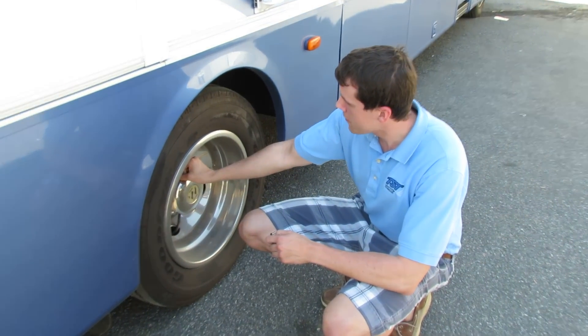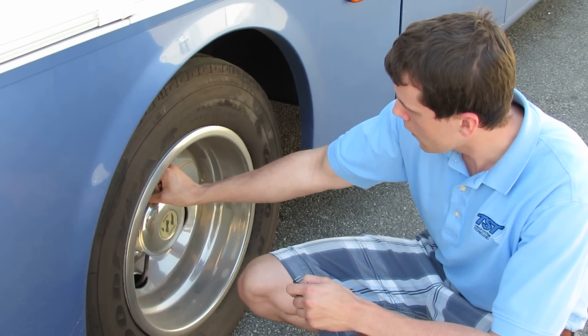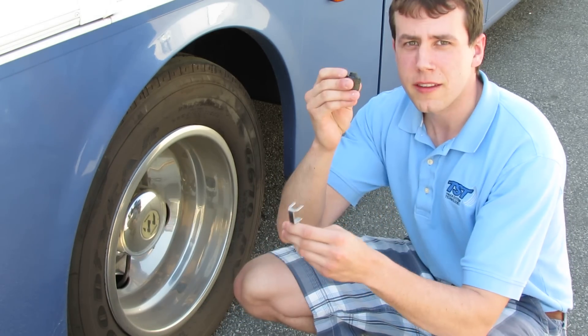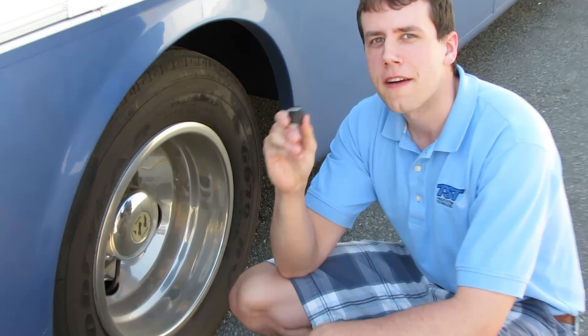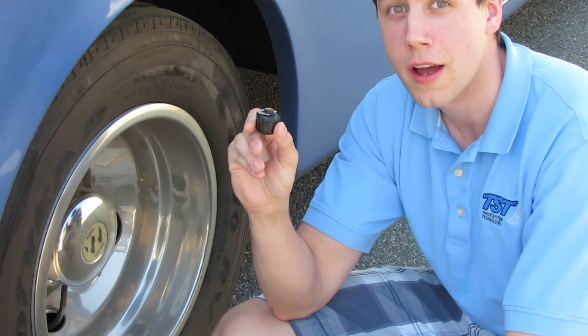Unscrew the cap from the valve stem. Place the sensor inside the wrench. Just like the 510, the 507 sensor is theft proof and this wrench will allow you to screw it on.